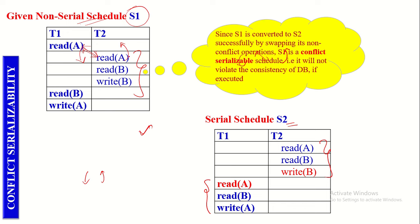This means the Non-Serial Schedule S1 will not violate the consistency of the database if permitted to execute. A Non-Serial Schedule is known as the Conflict Equivalent of a Serial Schedule if it can be successfully converted to a Serial Schedule by swapping its Non-Conflict Operations. In such a case, we say the given Non-Serial Schedule is the Conflict Equivalent of its Serial Schedule.